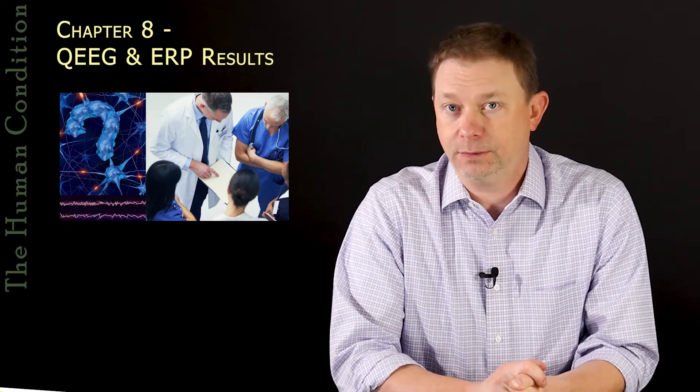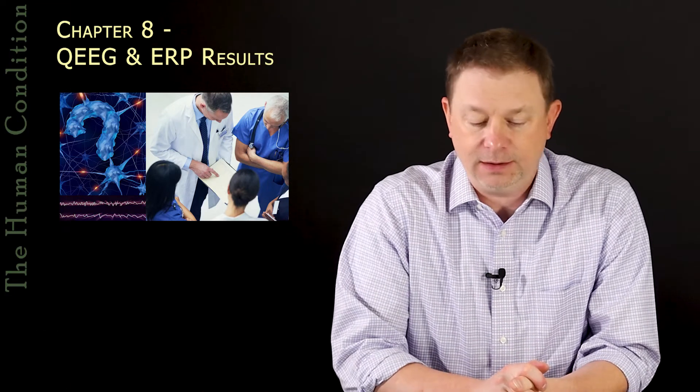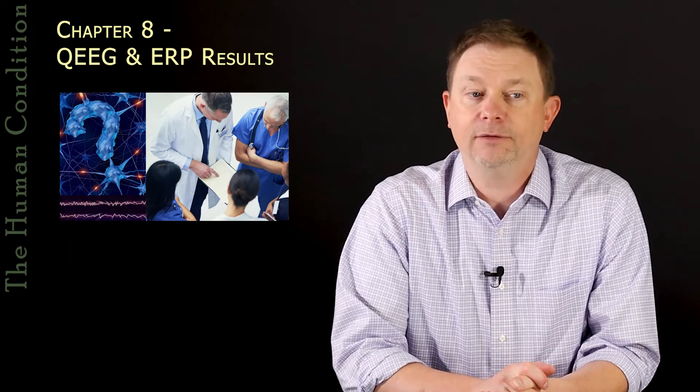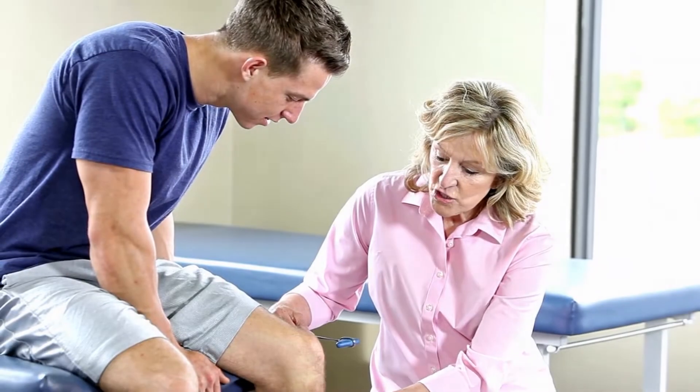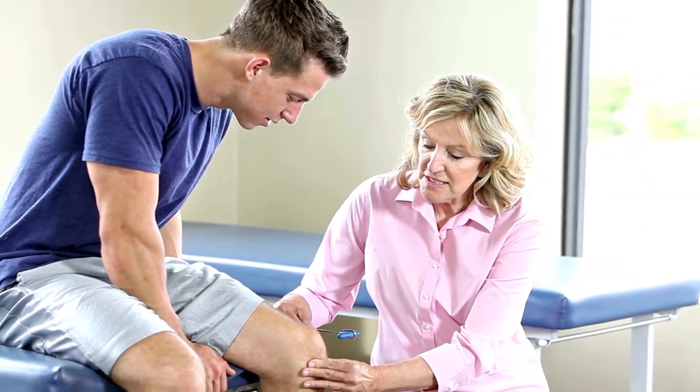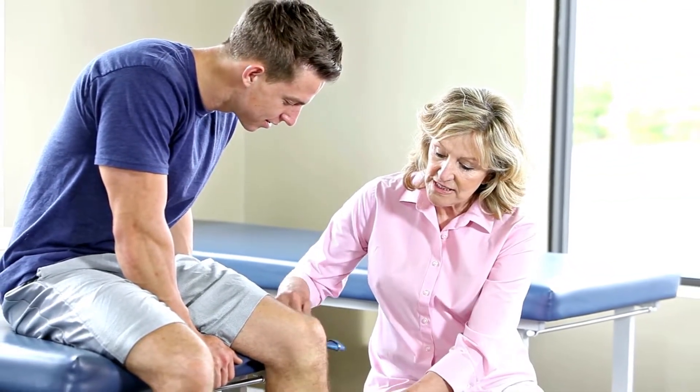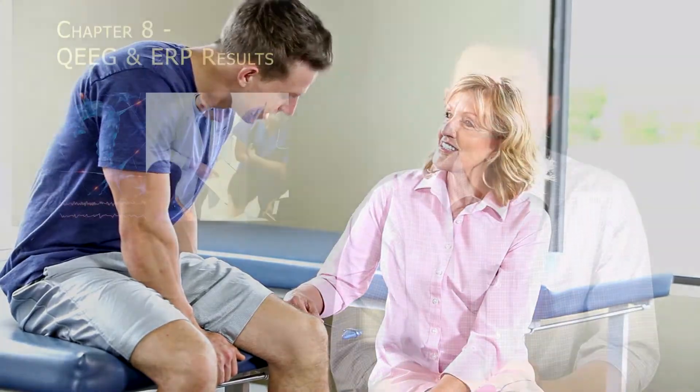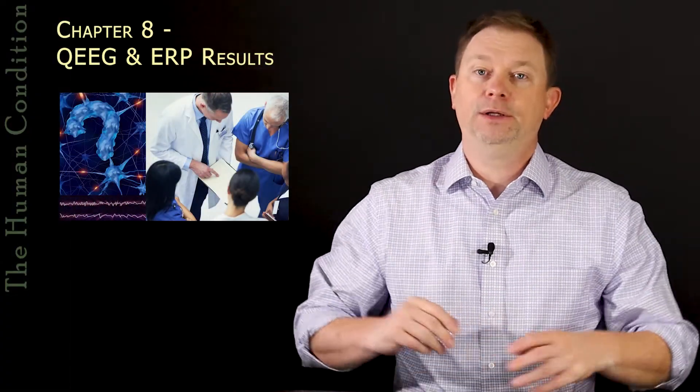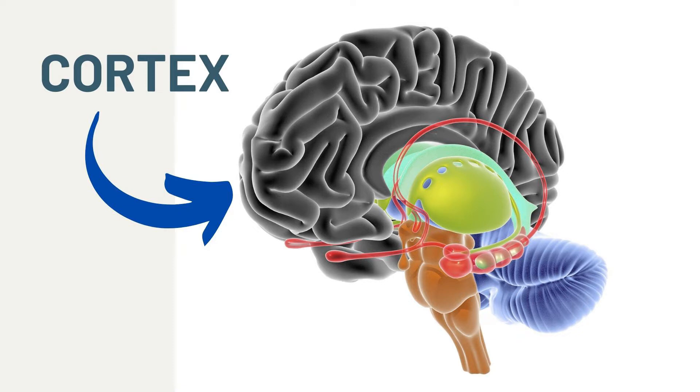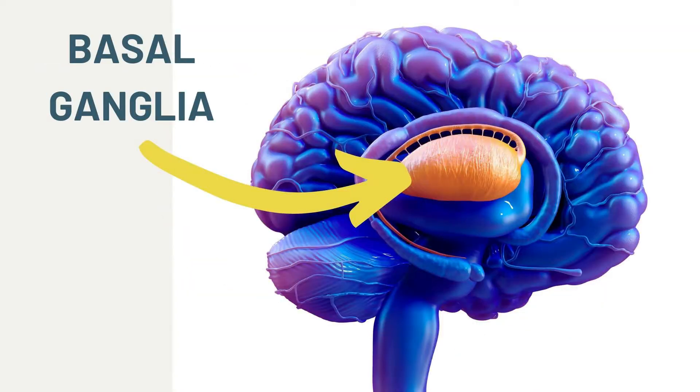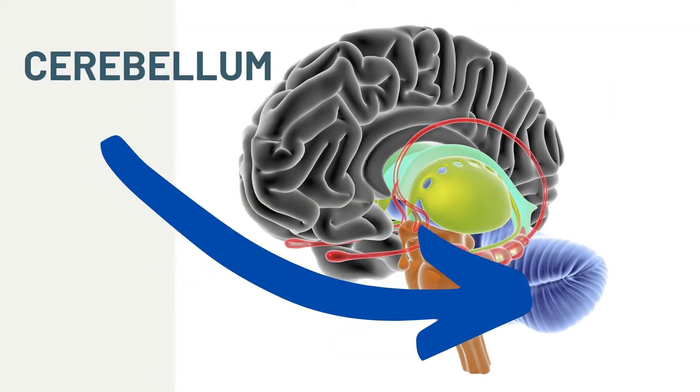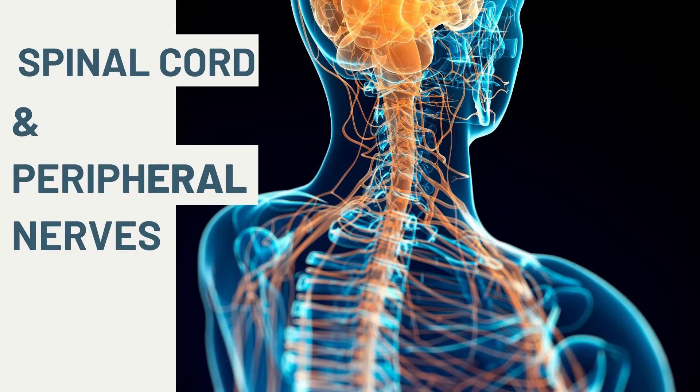Once an EEG and ERP is done, it's important to correlate it with the symptoms and observations that the doctor or clinician has seen and collected. In my opinion, it's very useful to have a physical examination, a neurological examination, that looks at functional neurology below the area of the brain that can be detected with EEG and ERP. EEG and ERP does a great job of detecting the cortex, the surface of the brain and the deep brain down to the limbic system, but it doesn't really check the thalamus and the basal ganglia, the brain stem and the cerebellum, the spinal cord and the peripheral nerves.